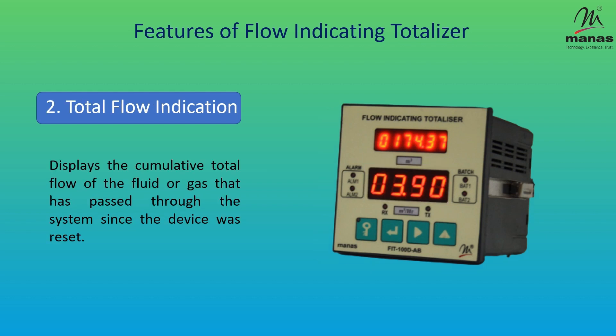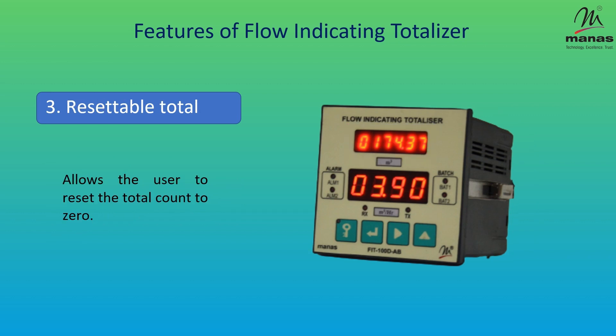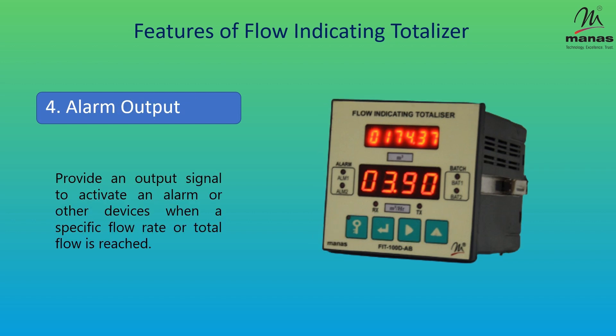Total flow indication displays the cumulative total flow of the fluid or gas that has passed through the system since the device was reset. Resettable total allows the user to reset the total count to zero.